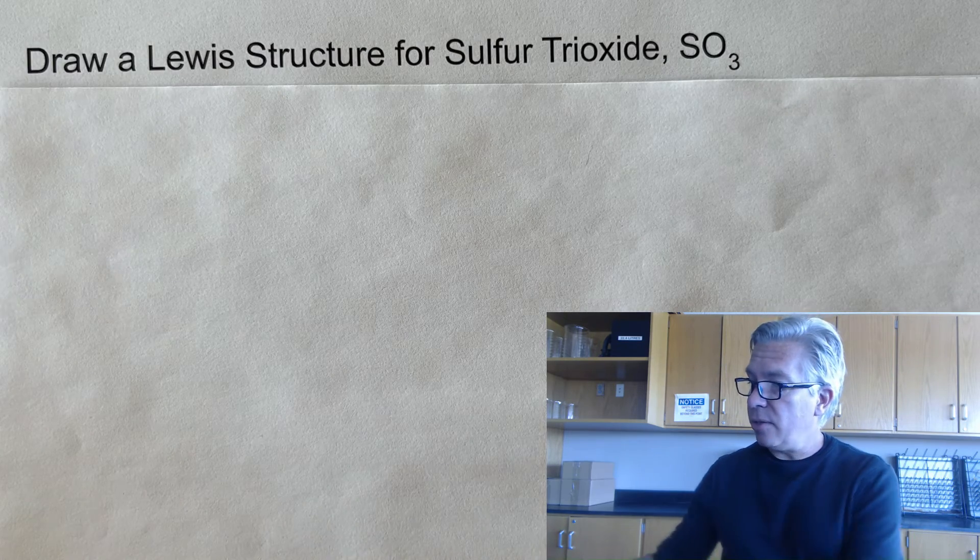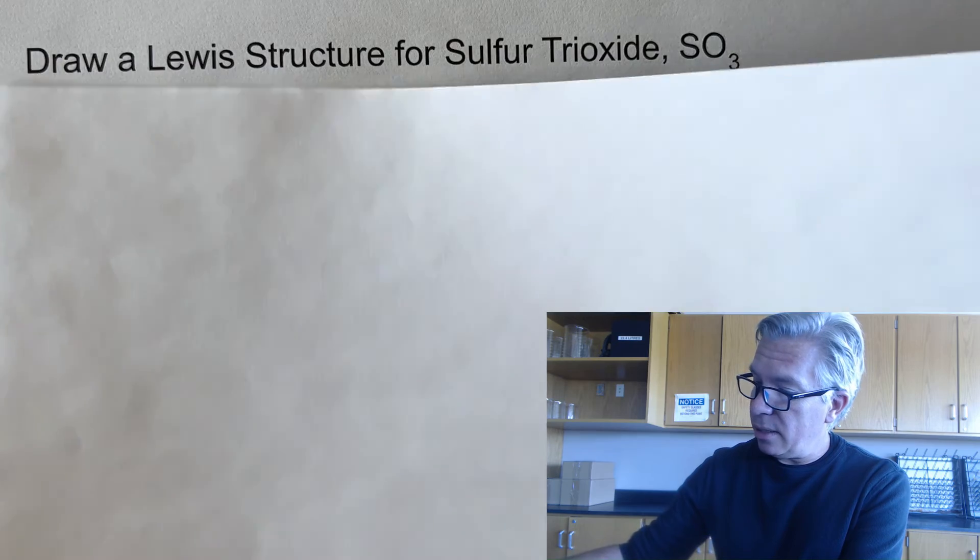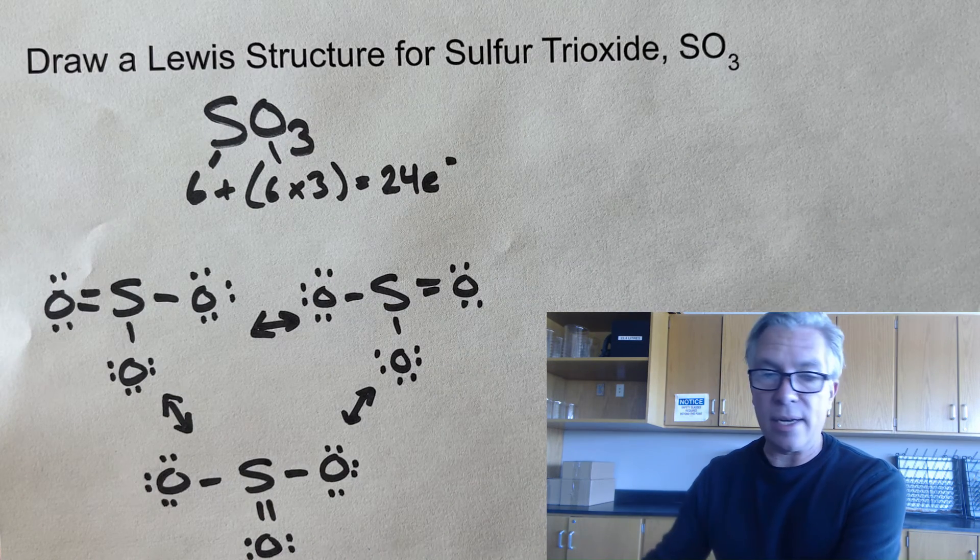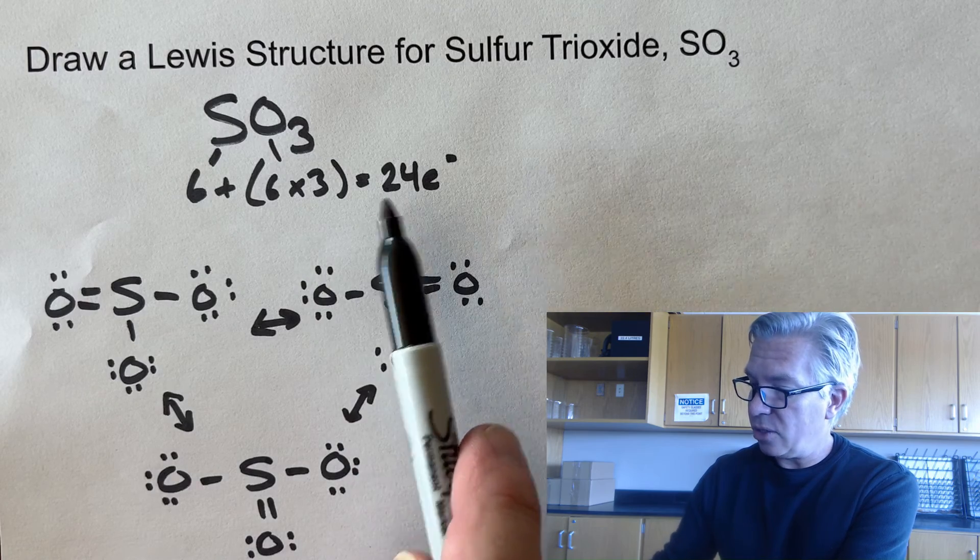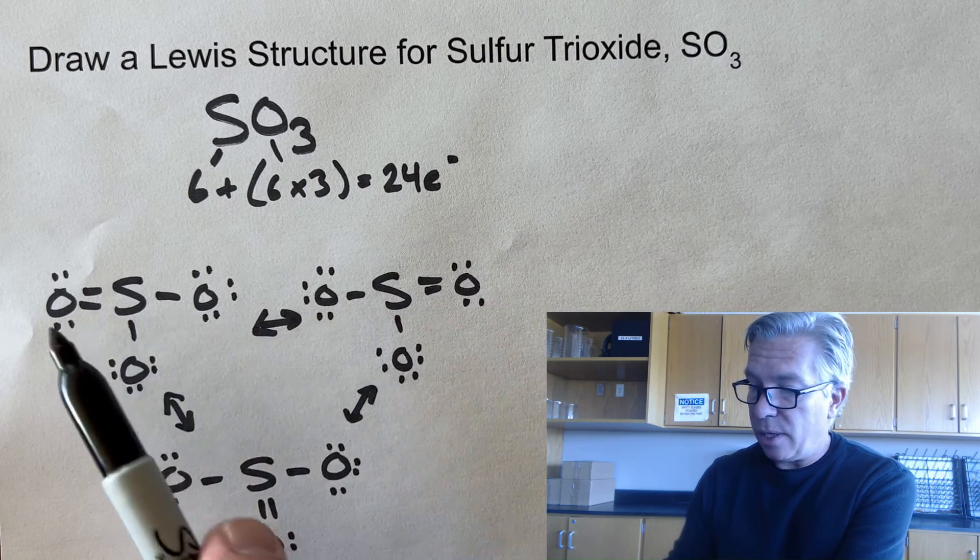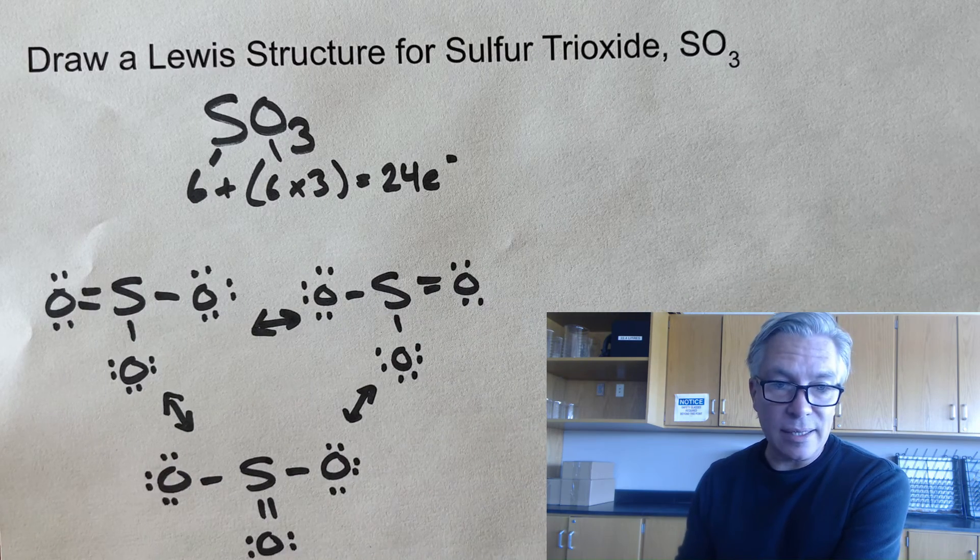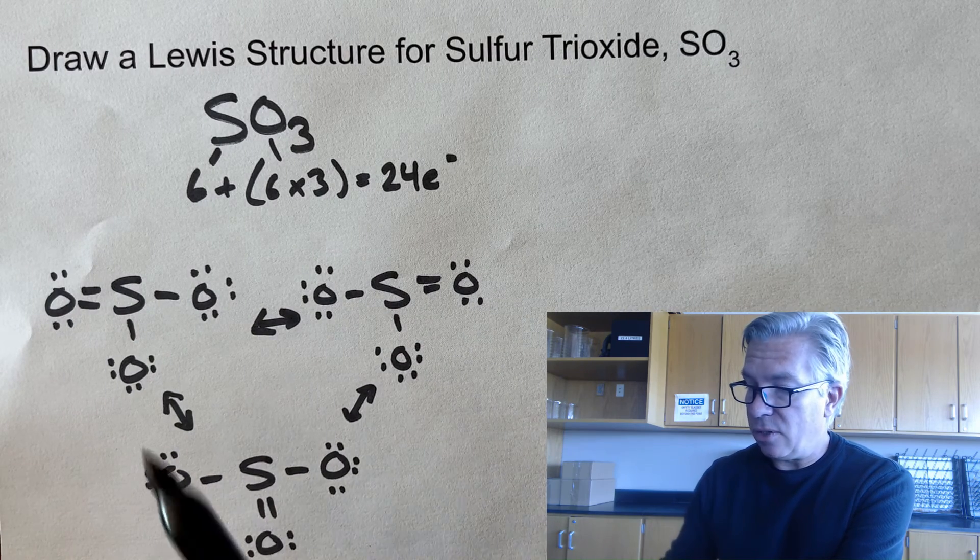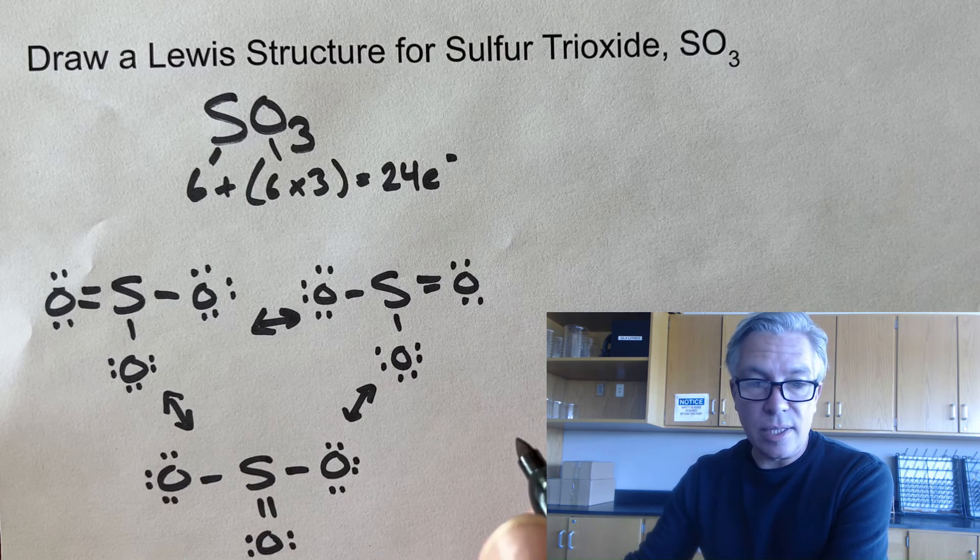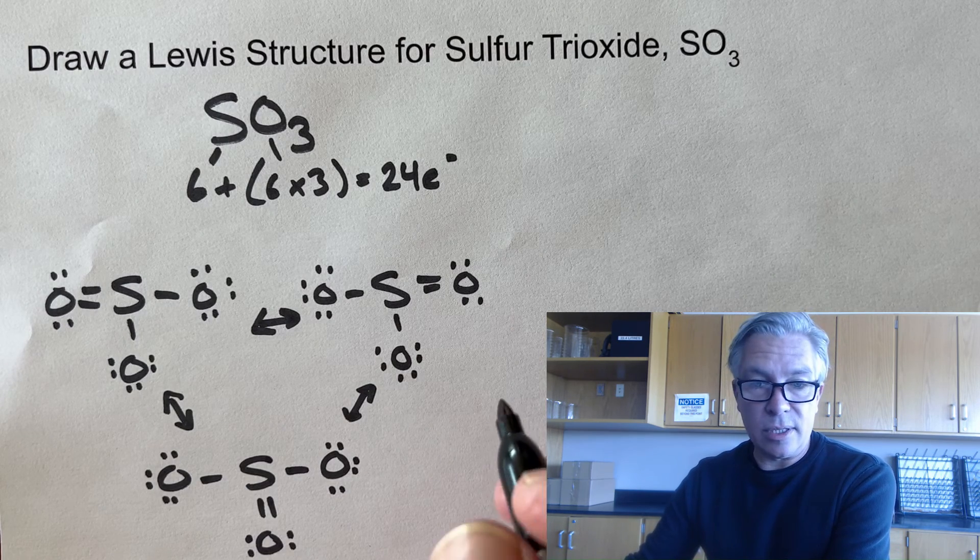Okay, if you were able to do it, then congratulations on finding out that there are three resonance forms of sulfur trioxide. Because with 24 electrons scattered around four atoms, you need a double bond somewhere, and there are three identical places that you can put it. And so you should actually have the three SO3 Lewis structures as the resonance forms of that.